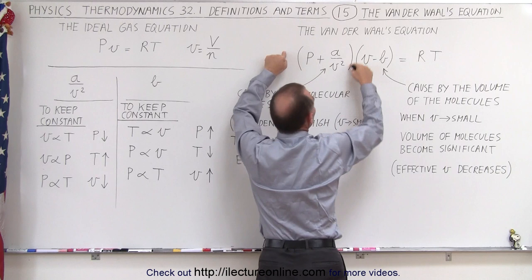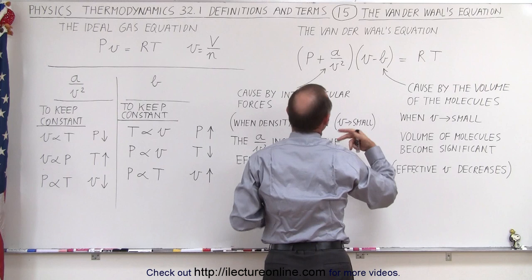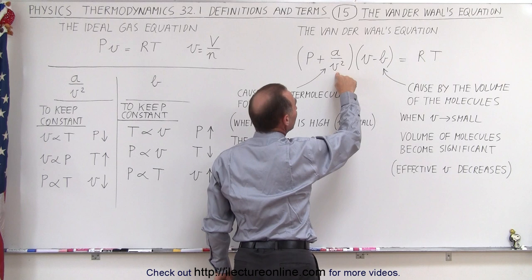So now we want to keep the pressure the same, we want to keep the temperature the same. To keep this the same but we've added the term, that means the volume needs to decrease. How does that work?